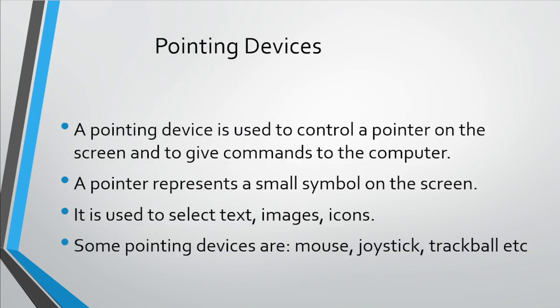Next is pointing devices. An input device used to control a pointer on the screen is called a pointing device. Pointing devices are those devices that control the cursor or pointer on the screen. A pointer is a small symbol that appears on the screen. By using a pointer, we select text, images, and icons. Pointers are used in graphical user interface.